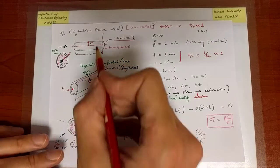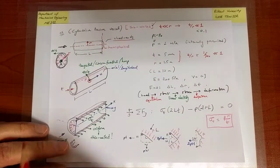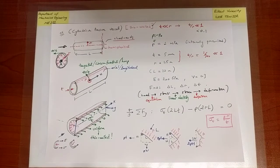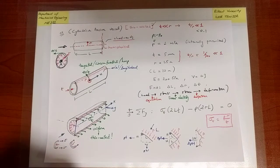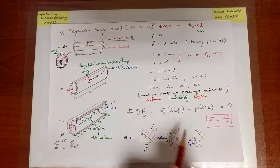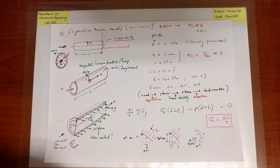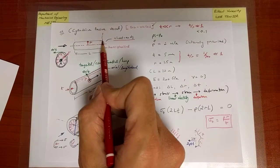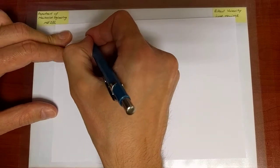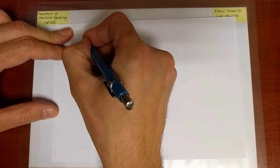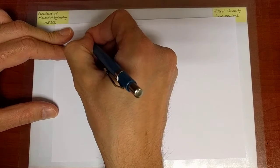That looks like this and I'm going to draw the free body diagram of that portion. So presently, just for simplicity, we're going to assume that those caps are hemispherical to simplify my picture a little bit. So this is the part that I'm going to draw a free body diagram of — just the hemispherical cap portion.